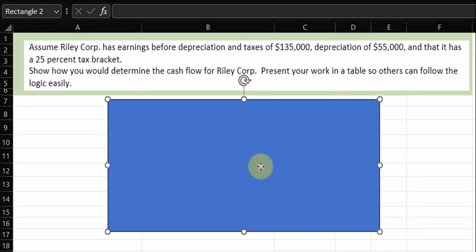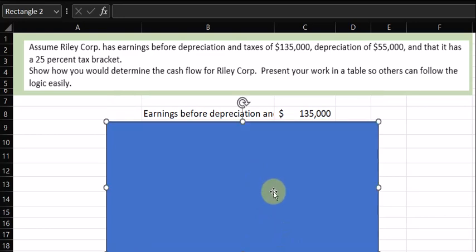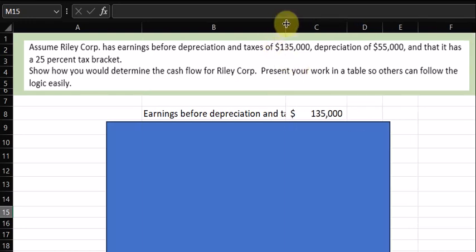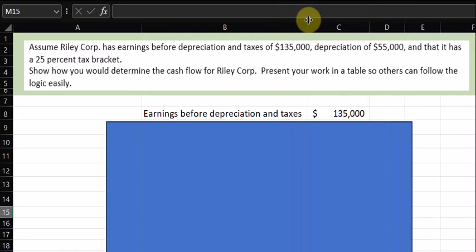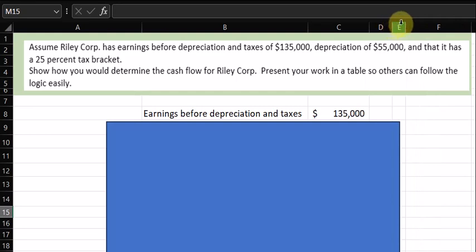Alright, so here's what we do. I worked this ahead of time. We start off with $135,000, earnings before depreciation and taxes. Make this a little bit bigger so we can see that. Shrink this and bring this back a little bit. There we go, that'll put it on the screen a little bit nicer for you.